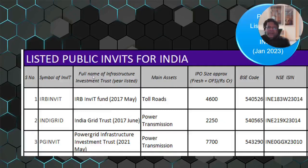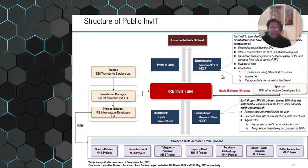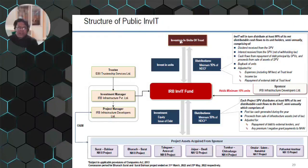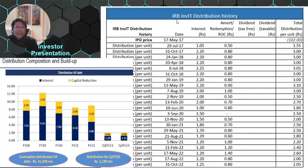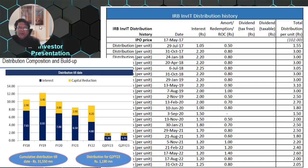As of January 2023, these are the three listed InvITs — IRB InvIT (2017), IndeGrid (2017), and PG InvIT (2021). A snapshot shows their BSE and NSE codes, issue sizes, and main assets. The structure of a public InvIT has investors putting money into units; the fund invests in equity or debt, and distributions flow upward to unit holders. Project managers, O&M, sponsors, and trustees are also part of the structure. The full distribution history of IRB InvIT per unit from IPO in 2017 is presented.